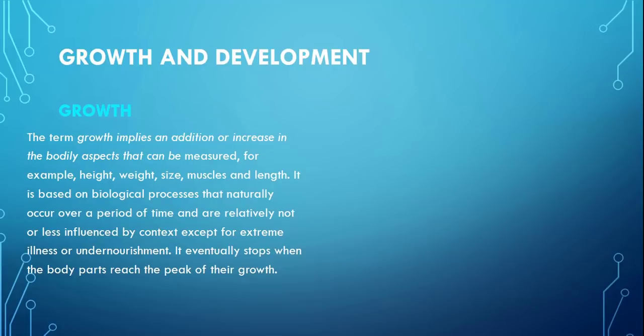جب انسان کے body parts ایک peak تک پہنچ جاتے ہیں — جہاں تک انہیں پہنچنا ہے — genetically جو چیزیں وراثت میں بچوں کو ملتی ہیں، parents کے قد کاٹھ کی طرح وہ اسی level تک یا تھوڑا کم بیش پہنچ کر، جس میں دوسرے factors بھی involved ہیں، growth کا یہ سلسلہ رک جاتا ہے۔ جبکہ ہم development کو دیکھتے ہیں تو development refers to certain changes that occur within the lifespan of an individual.